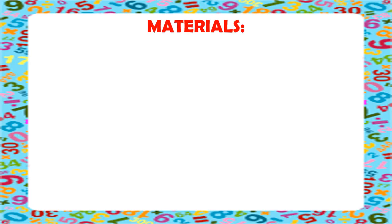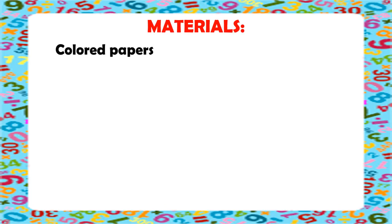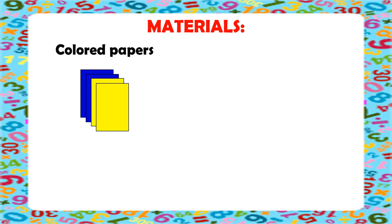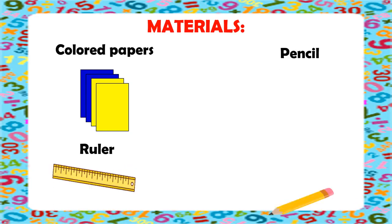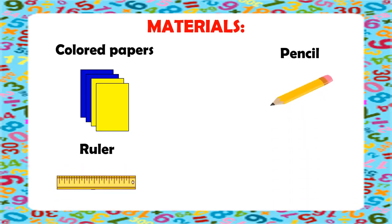These are the materials that we are going to use in making an algebra tile. First, we need blue and yellow colored papers. Blue will represent the negative integers and yellow will represent the positive integers. We also need a ruler, a pencil, and lastly, a scissor.